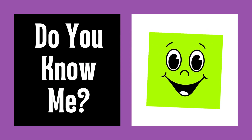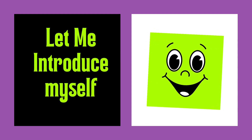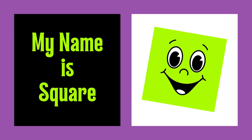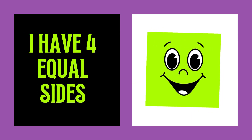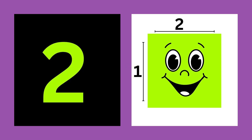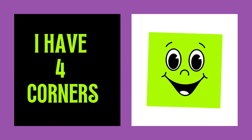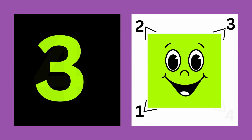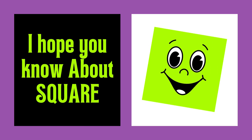Hello friends, do you know me? Let me introduce myself. My name is Square. My color is green. I have four equal sides: one, two, three, four. I have four corners: one, two, three, four. Hey my buddies, I hope you know about Square.